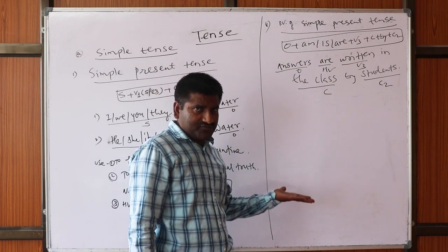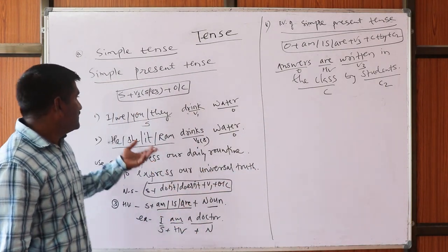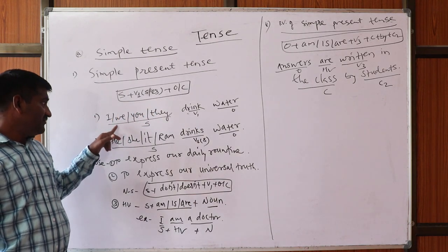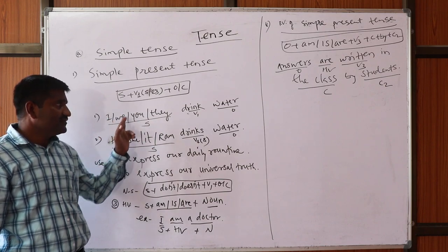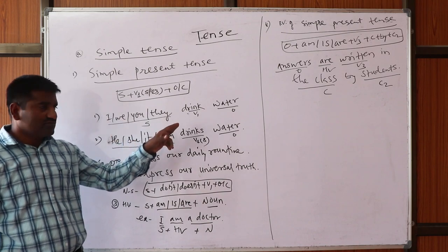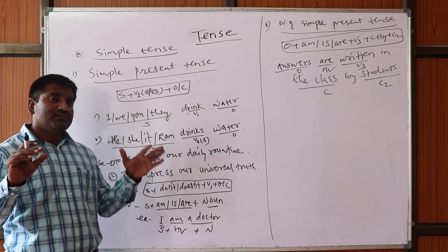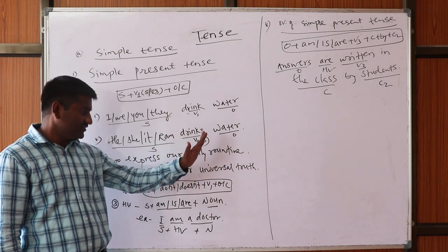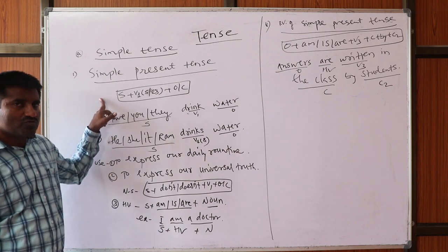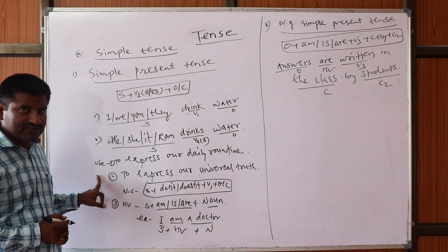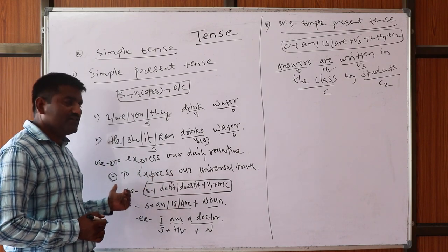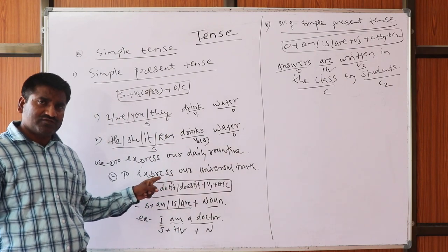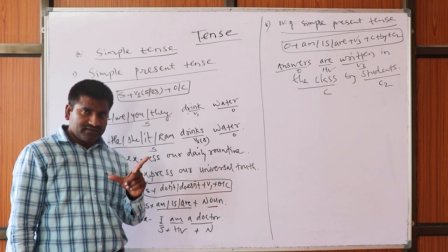So these are the types of expressing ourselves using simple present tense. For first and second persons and 'they,' we use V1: I drink water, we drink water. For third person singular we add S or ES: he drinks, she drinks. The usage covers daily routine and universal truth, for example: the sun rises in the east, water flows downward, fire goes up.